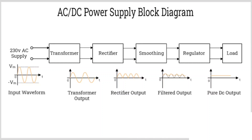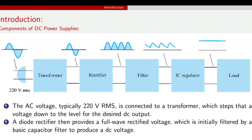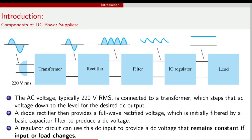The AC voltage, typically 220 volts RMS, is connected to a transformer which steps down the voltage to the desired output. Most circuits use full-wave bridge rectifiers because they change the AC signal to DC signal with less ripples. The full-wave rectified voltage is initially filtered by a basic capacitor filter — L and C filter or parallel combination — to produce a DC voltage. The regulator circuit uses this DC input to provide a constant DC voltage for the load regardless of input or output changes.